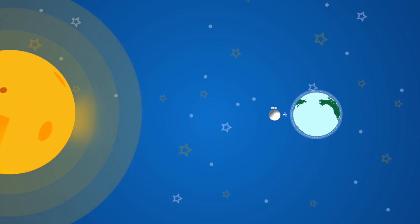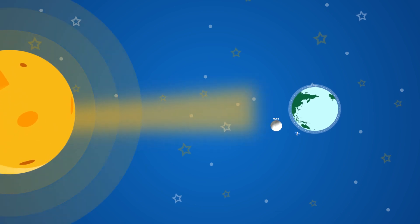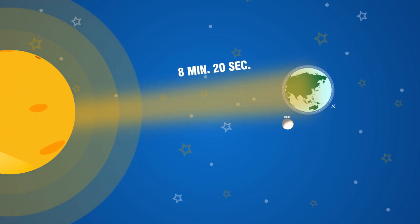Do you know how much time sunlight takes to reach the Earth? It takes 8 minutes and 20 seconds.